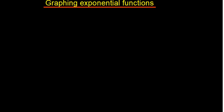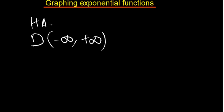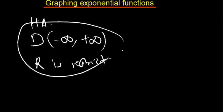Before we start, exponential functions have what we call the horizontal asymptote. These are the basic things we need to understand. When we talk of domain, the domain of an exponential function is always from negative infinity to positive infinity. But the range is restricted. This is the inverse of logarithmic functions, because logarithmic functions have a vertical asymptote, and the range is always from negative infinity to positive infinity, while the domain is restricted.